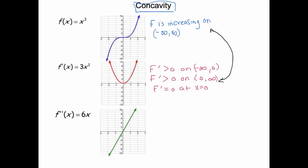What we're going to do is take it a level down and look at the derivative of the derivative. Let's talk about the derivative as though that's our function. The derivative is decreasing on the interval negative infinity to zero, and f prime is increasing on the interval zero to infinity.